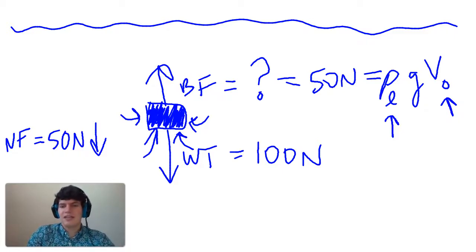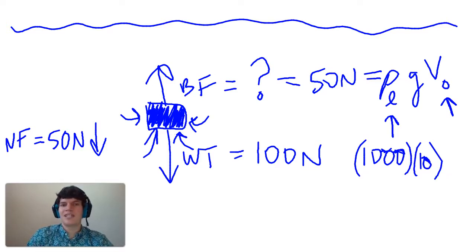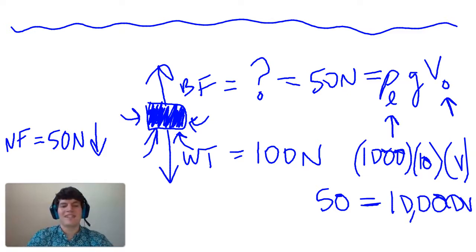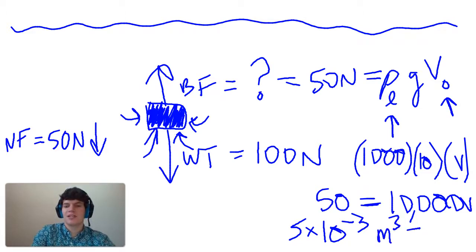Now, the density of water, you should memorize this, is 1,000 kilograms per meters cubed. Gravity is equal to 9.8 meters per second squared. We're going to round that to 10. So 1,000 times 10. And the volume of the object, in this case, that's what we're solving for. So 50 equals 10,000 times volume. If we divide by 10,000 on both sides, we get 5 times 10 to the negative third meters cubed equals volume.